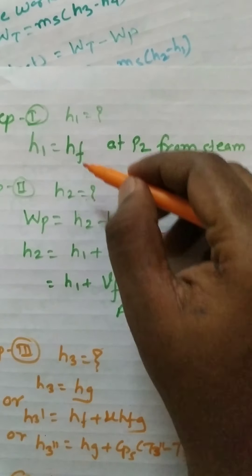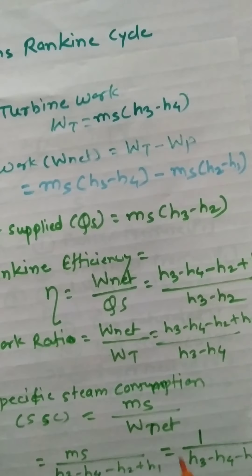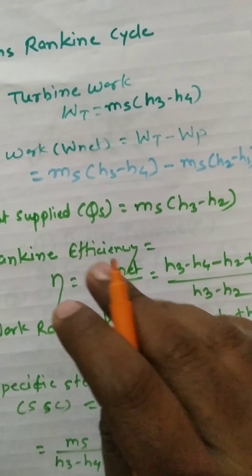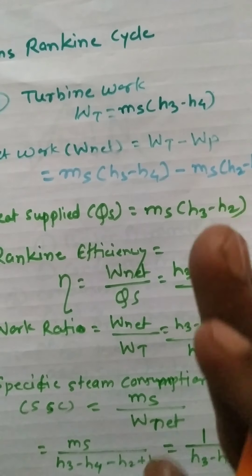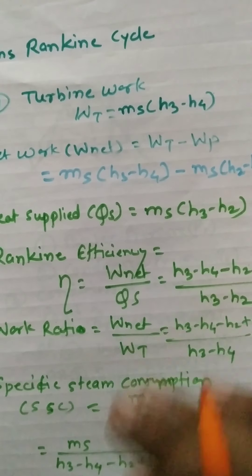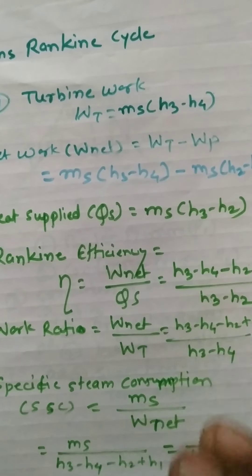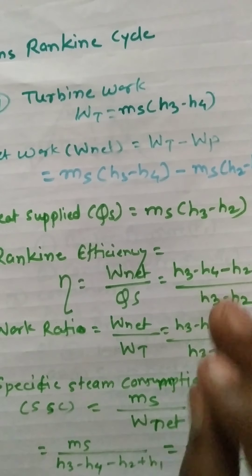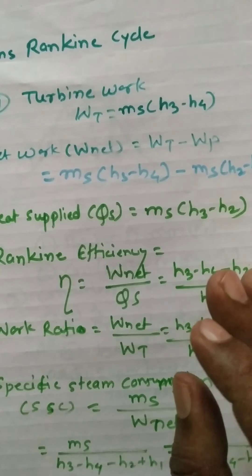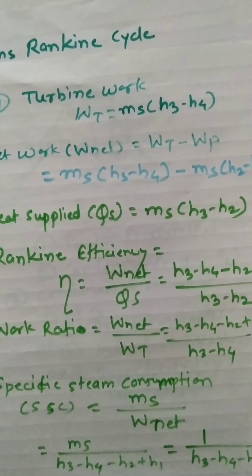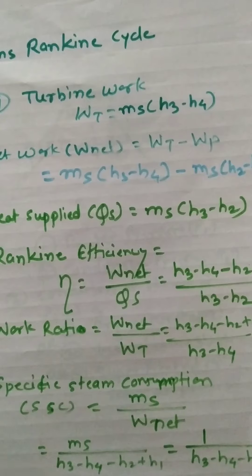Once you have H1, H2, H3, and H4, you can find any parameter using the formulas. Instead of solving many different problems, just remember these few steps and you can solve any type of Rankine cycle problem. You will easily get 7 marks. All the best for your exam.